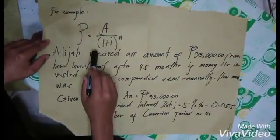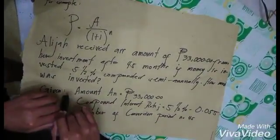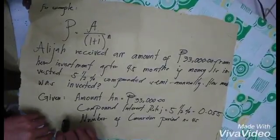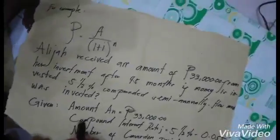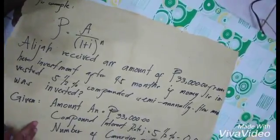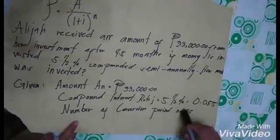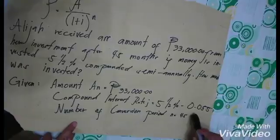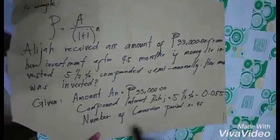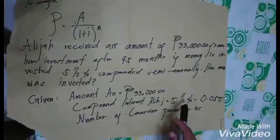For example, Elijah received an amount of $33,000 from her investment after 45 months. If money is invested at 5.5% compounded semi-annually, how much was invested? The given amount is $33,000. The compound interest rate is 5.5%. If you encounter this type of number, please move it to the right side into two decimal places — so 5.5% becomes 0.055. The number of conversion periods is 45.